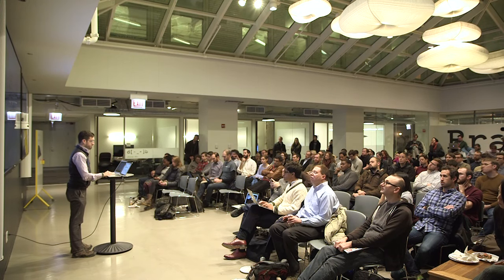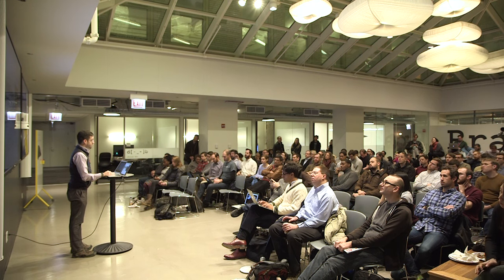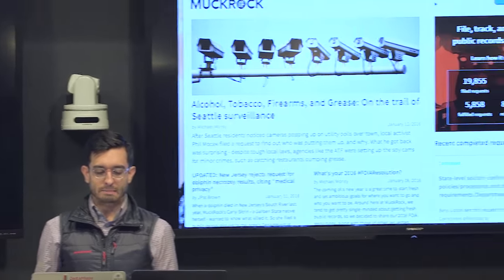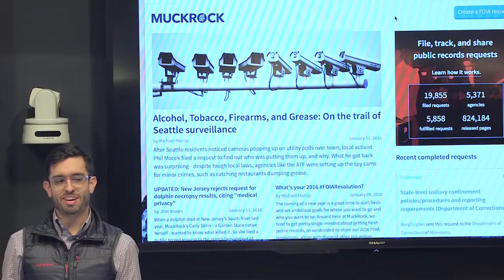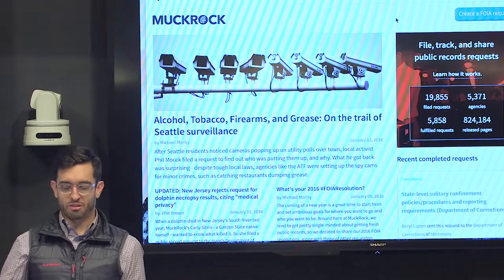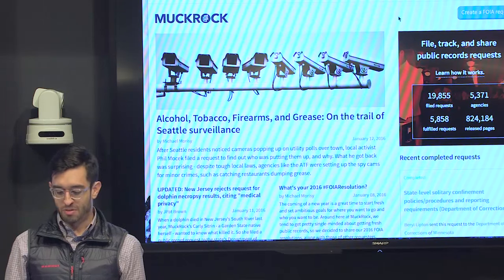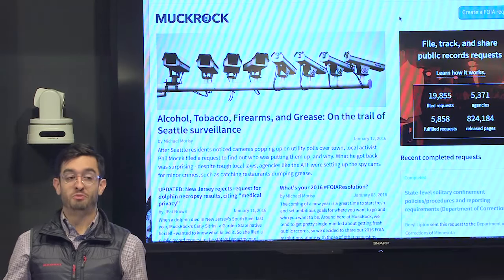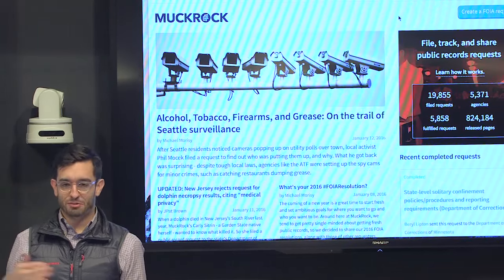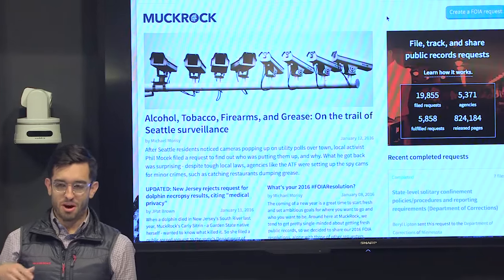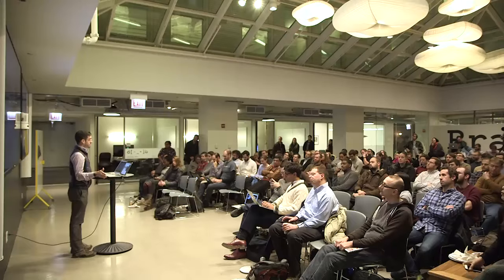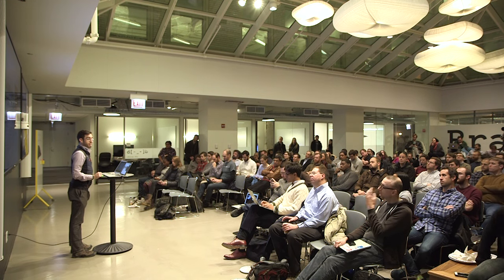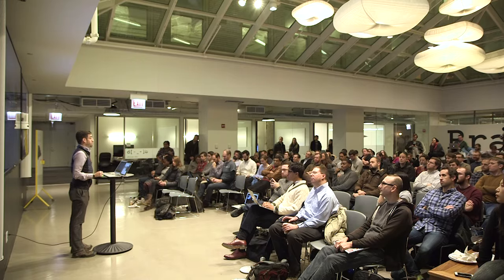MuckRock is basically like FOIA Machine, except they have some artificial intelligence that generates replies to the government. They charge a small fee, but computers follow up for you. When the government doesn't respond to your request, the MuckRock computers basically say, hey, you haven't responded to this, it's past the deadline — it's beyond your time as outlined in your state law. The deadline in Illinois is five business days, and they're allowed to take five more for complicated requests. After that two-week window, you technically have the right to recourse — going to the attorney general's office or suing.